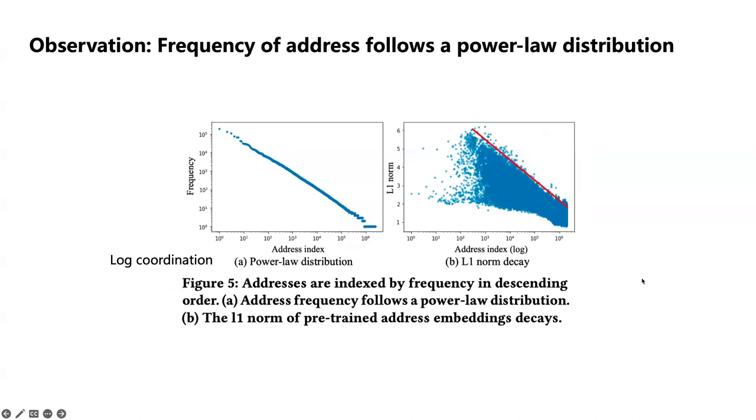At the same time, if we sort all the addresses descendingly according to their occurrence times, that is frequency in total transactions, we can observe that the majority of addresses only occur few times, which can cause their corresponding embedding vectors to not be sufficiently trained.